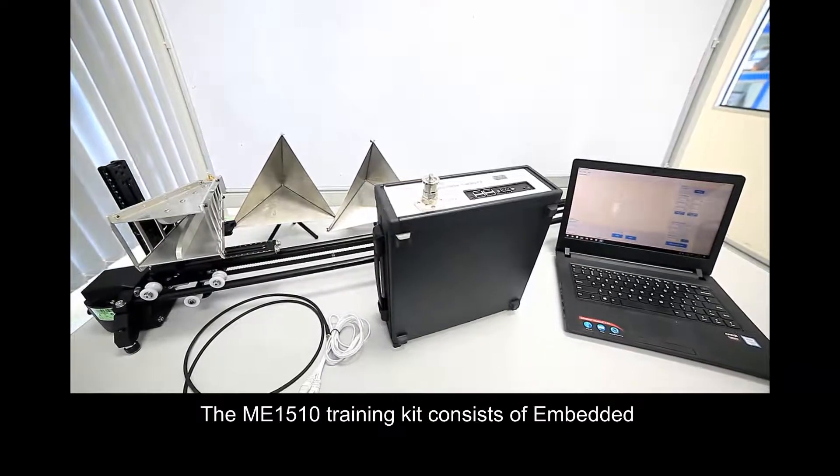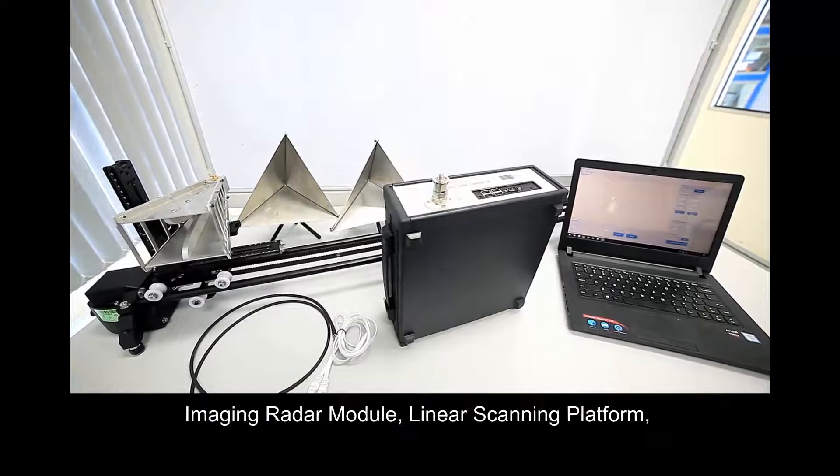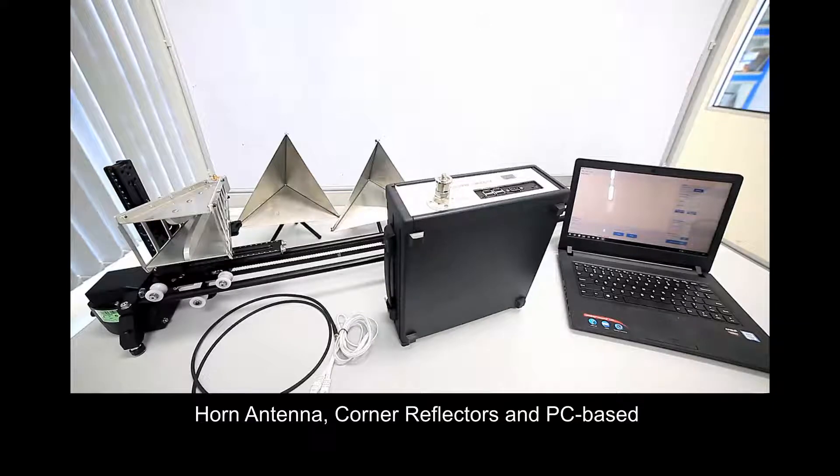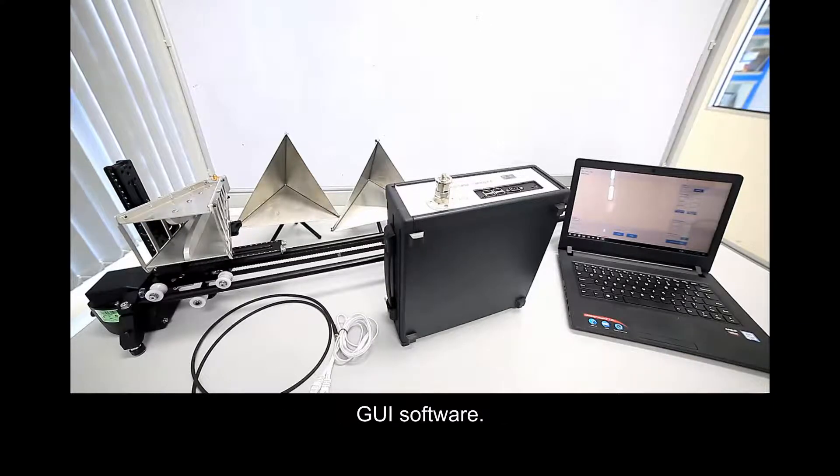The ME1510 training kit consists of an embedded imaging radar module, linear scanning platform, horn antenna, corner reflectors, and PC-based GUI software.